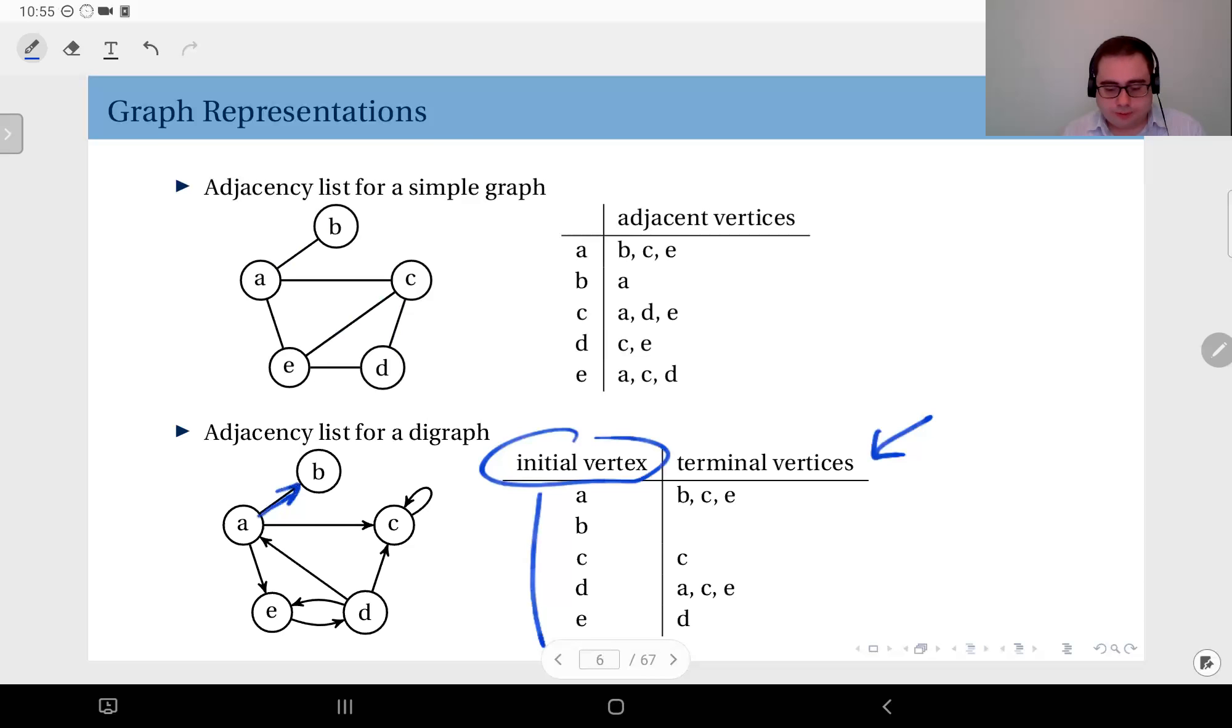For instance, from a there is an edge to b, an edge to c, and an edge to e, therefore my list is b, c, e for the initial vertex a. On the other hand, when you look at b, there is an edge incident to b, but d is not the initial vertex for that edge, therefore the list for b is empty.